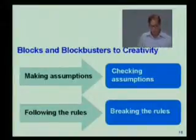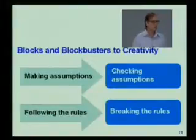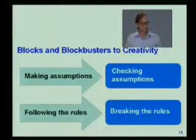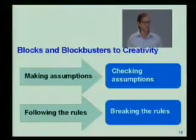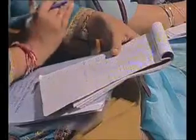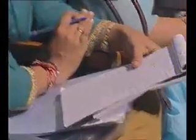Another block is following the rules. If you keep following rules, you become a conformist and do not think outside the box. For example, library rules — if you don't break those, you may not read books as thoroughly as you could. Entrepreneurs are non-conformists; they break the rules, and when you break the rules you become a blockbuster.